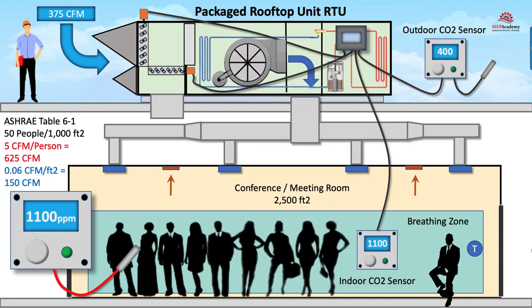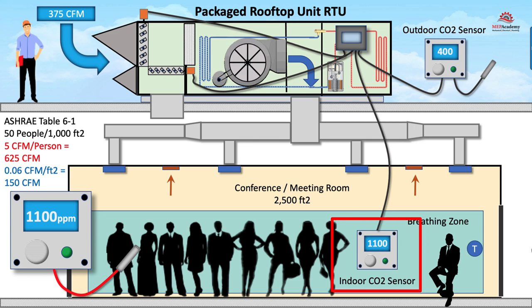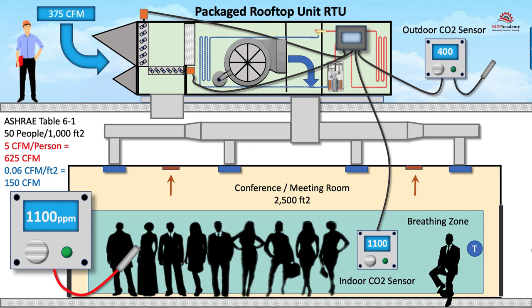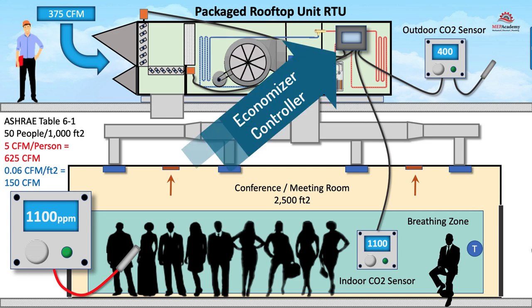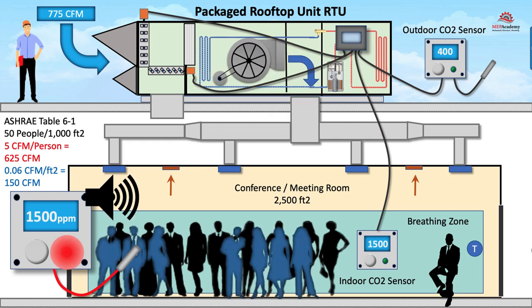CO2 sensors help determine if the current ventilation rate is adequate or if adjustments are necessary. The CO2 sensor provides a control signal based on the measured CO2 concentration. As CO2 levels rise due to occupancy or other factors, the sensor sends a signal to the Building Automation System or the Economizer Control System. When the CO2 concentration surpasses a pre-set threshold, often referred to as the set point, the Economizer Control System increases the outdoor air intake. This adjustment brings in more fresh air from the outside to dilute the CO2 and maintain acceptable indoor air quality. The set point for CO2 concentration can be adjusted based on the specific requirements of the space and occupant density.